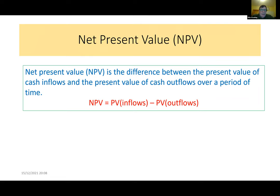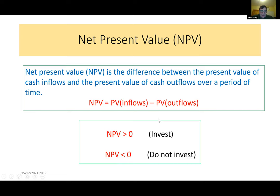Net present value is the difference between the present value of cash inflows and the present value of cash outflows over a period of time. If you want to invest in a business, you calculate the present value of all the money you're putting in (outflows) and the present value of all the cash coming back (inflows). If the net present value is greater than zero, invest; if it's less than zero, do not invest.